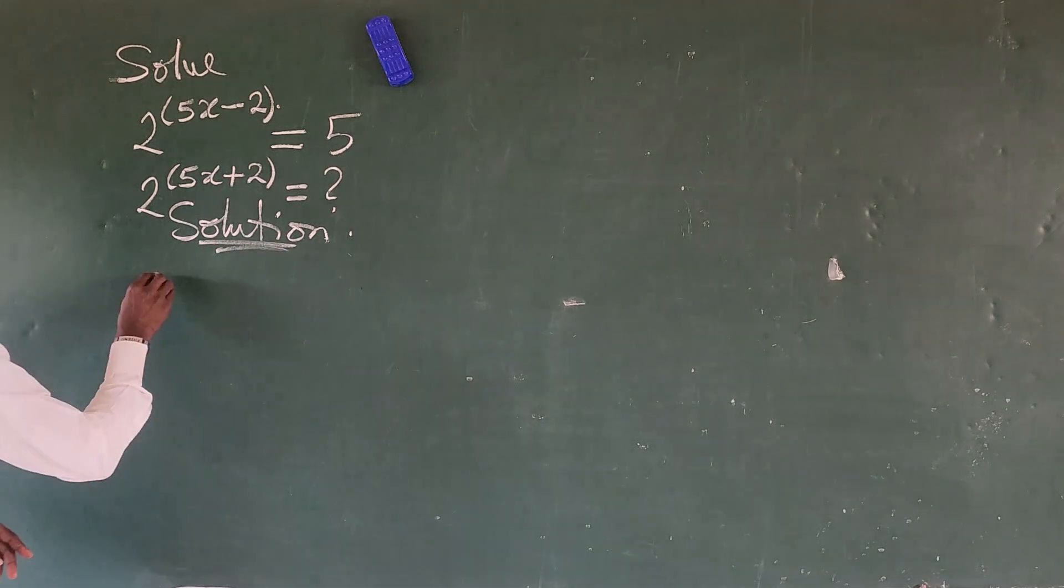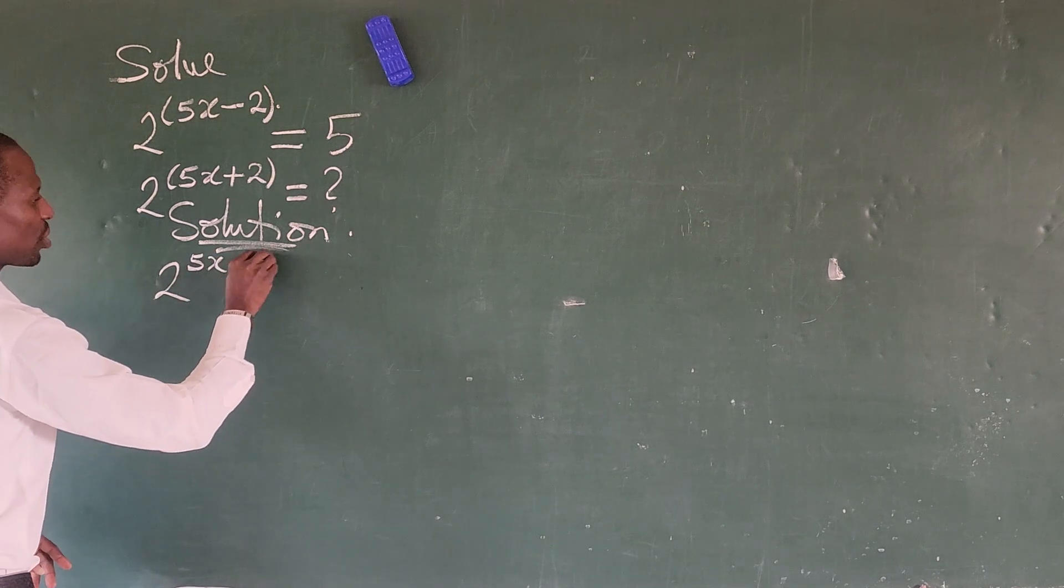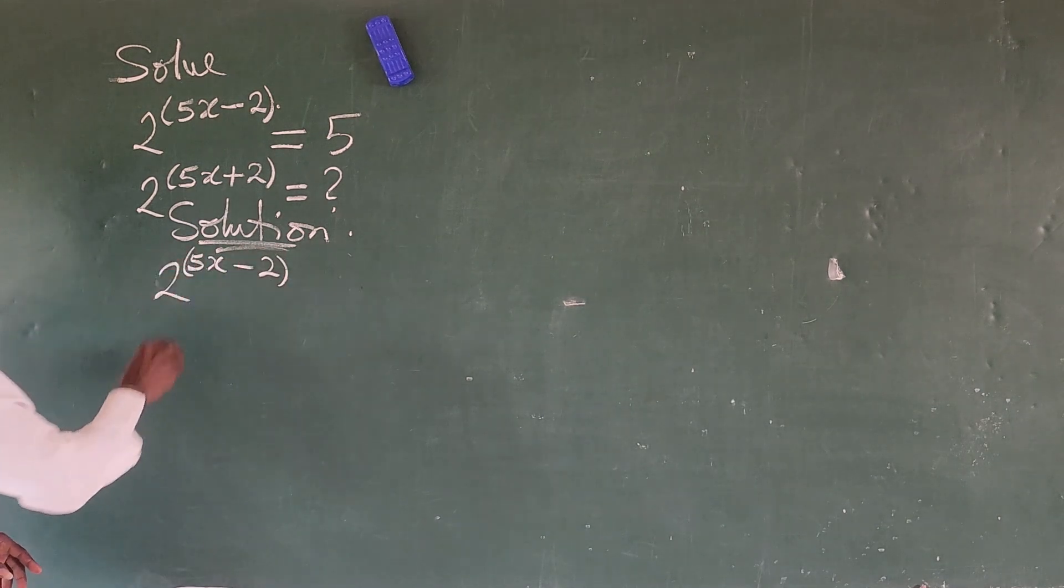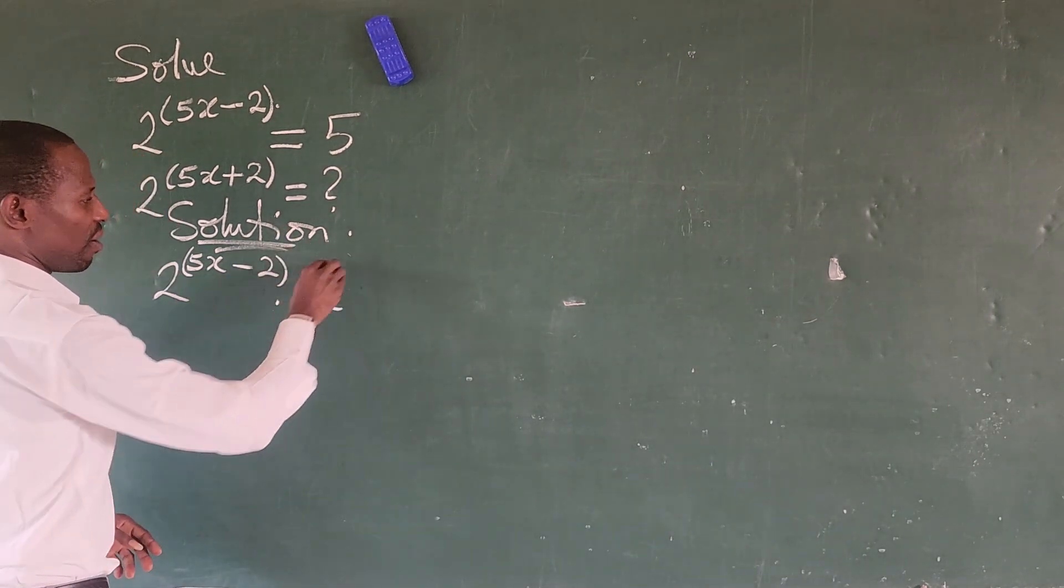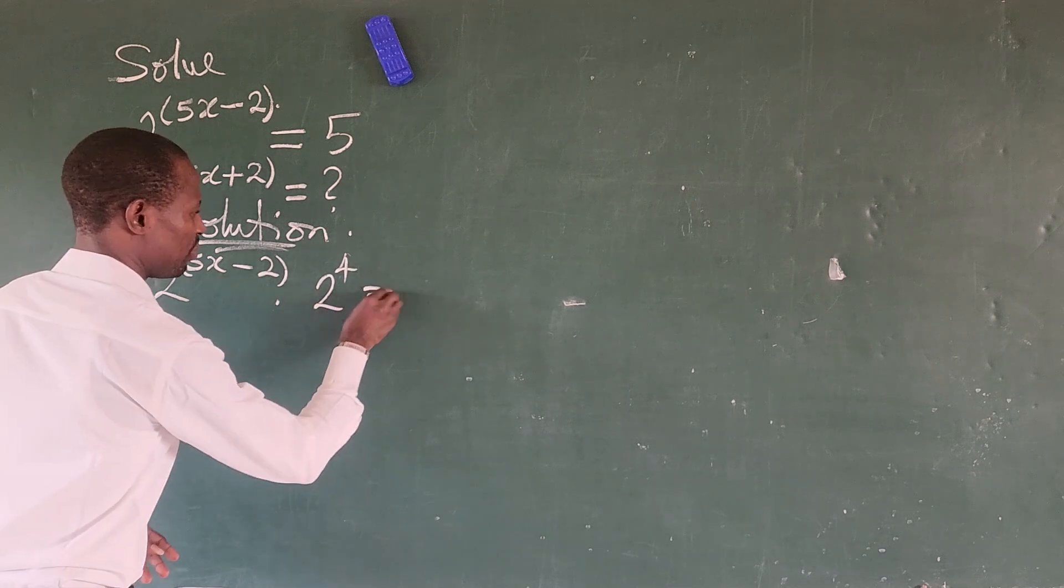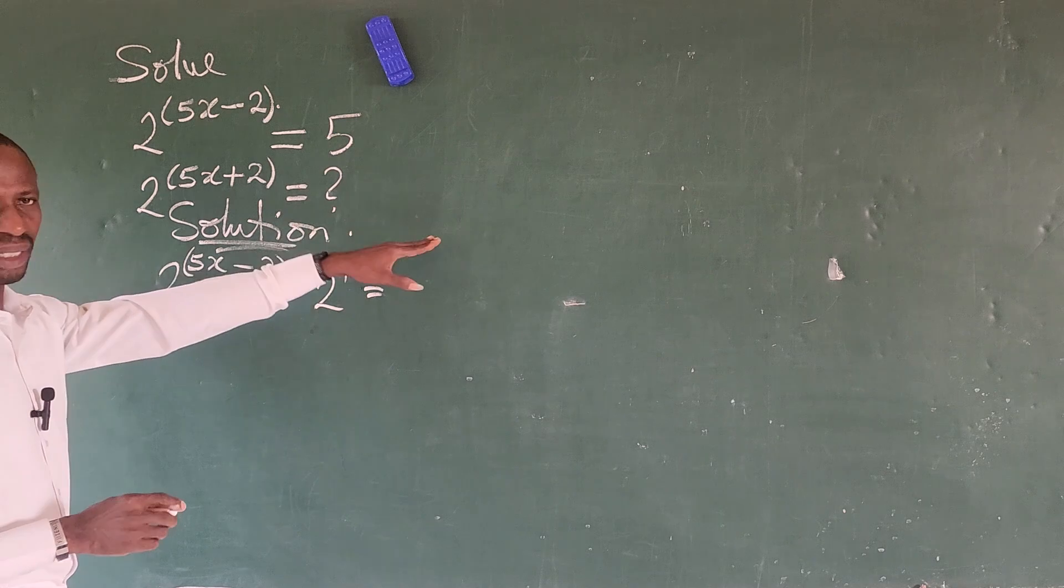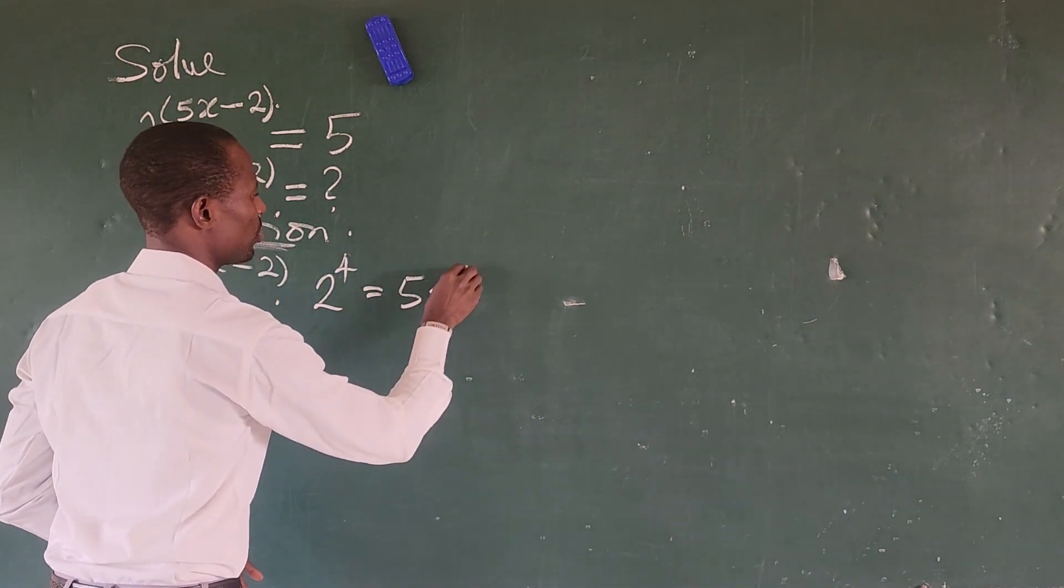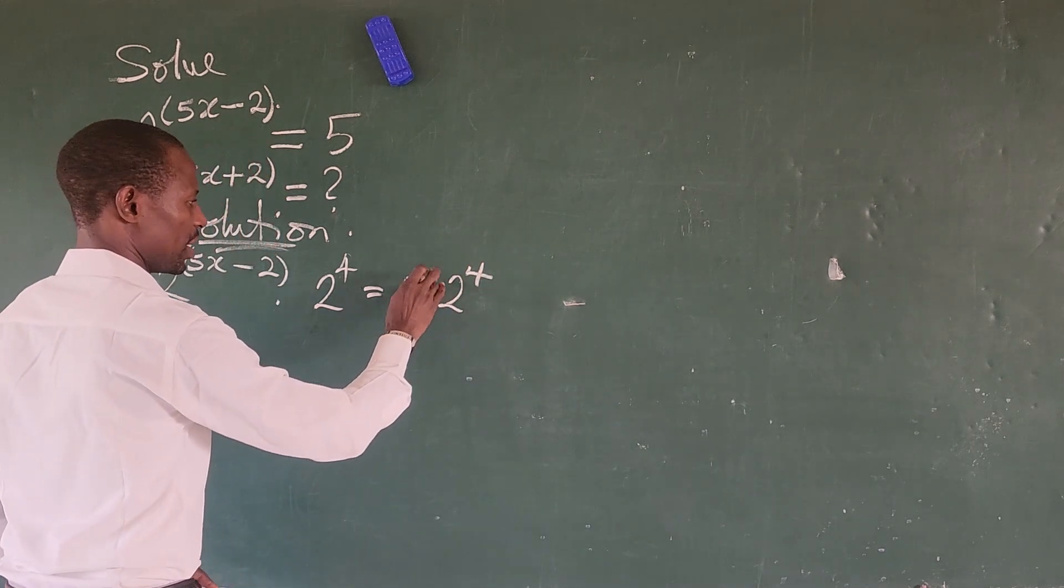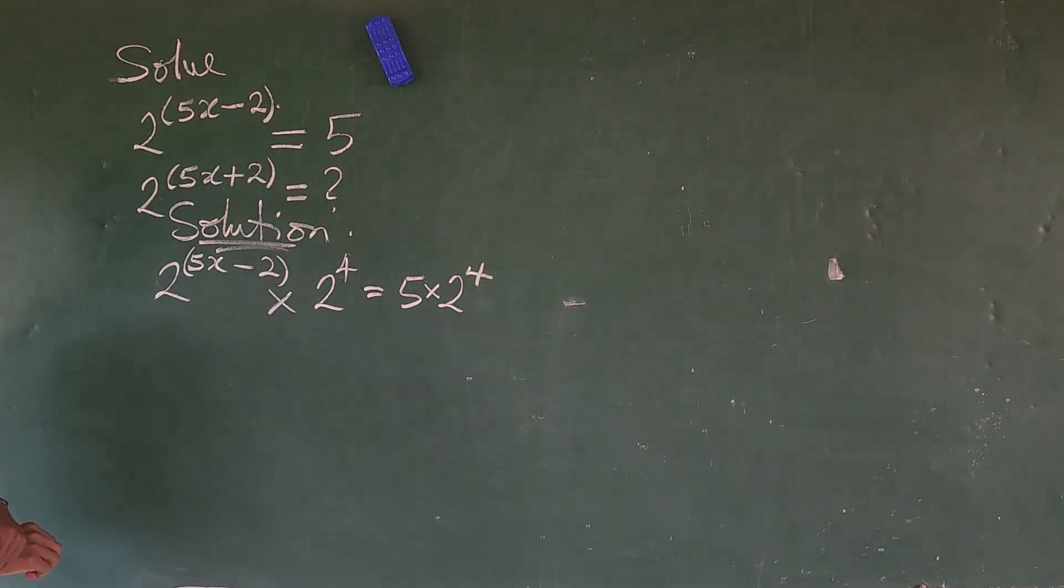Okay, solution. We have here 2 to the power of 5x minus 2. I should multiply it by 2 to the power of 4. And because I multiplied the left hand side with this entity, we must do that to the right hand side. So we have here 5 times 2 to the power of 4. For you not to be confused, let's use our normal multiplication sign here.